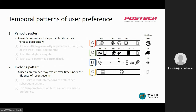Evolving pattern means that a user's preference may evolve over time under the influence of recent events. The right picture is an instance of four users' purchase sequences. I will explain each example using this picture.